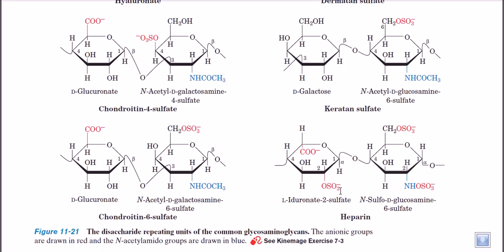We also have heparin sulfate, which we can also call just heparin. Heparin is a really important molecule carried by our blood cells and is really necessary for us to live. There are many different important components of our body being made by these glycosaminoglycan sugar moieties, and we can see how these glycosaminoglycan moieties arrange together to make the extracellular matrix.